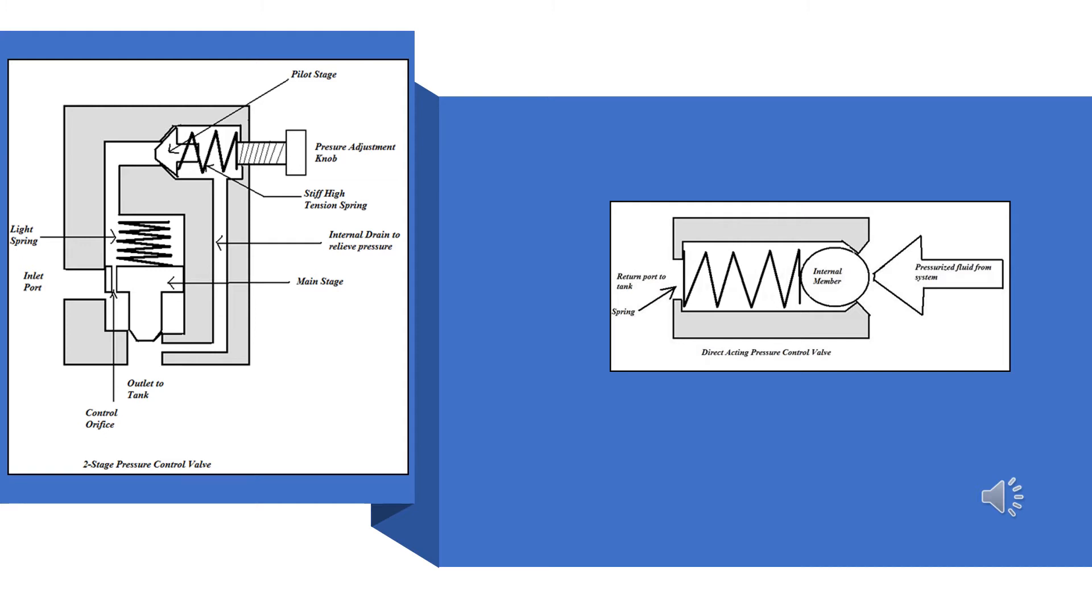Notice also that there is a drilling through the face of the main stage called a control orifice. This is important. When the dart begins to open, oil will vent out of the valve. As the oil goes around the dart, the amount of oil that can move through the control orifice is much less.